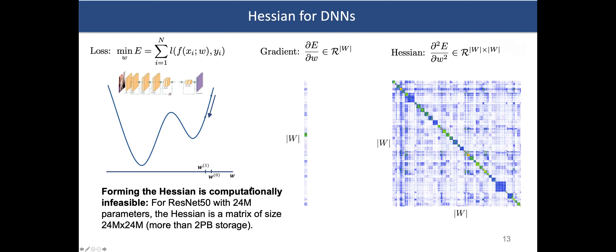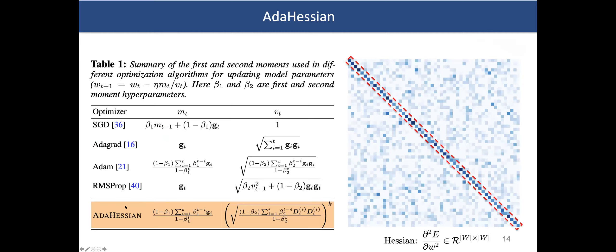AdaHessian is a second-order optimizer that outperforms first-order methods — SGD and Adam — across computer vision, NLP, and recommendation systems. In all cases it is either on par or significantly better than state-of-the-art, which is expected given the additional curvature information available beyond first-order methods.